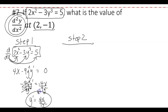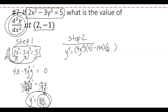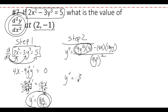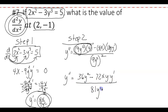Step 2: find the second derivative by differentiating y' = 4x/(9y²) using the quotient rule. Low d-high minus high d-low, over low squared. The d-low term is the derivative of 9y², which is 18y·y' — don't forget the y' since it's a y term. This gives y'' = [9y²·(4) − 4x·(18y·y')] / (9y²)².